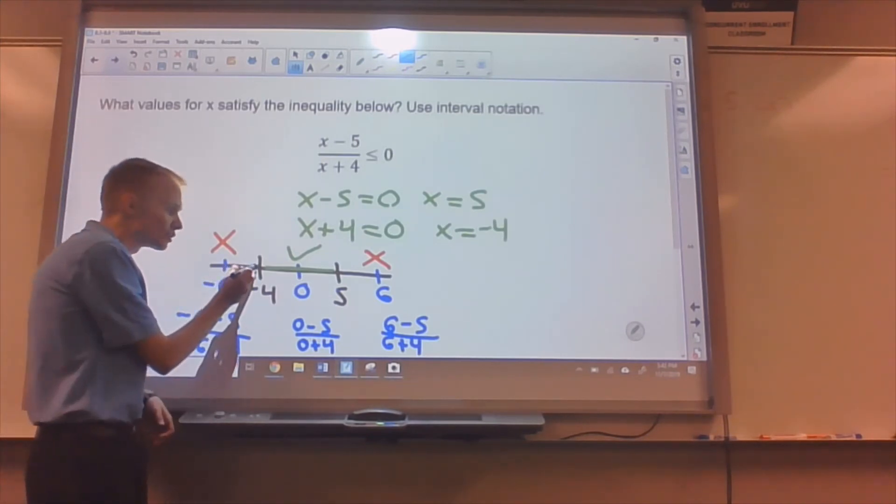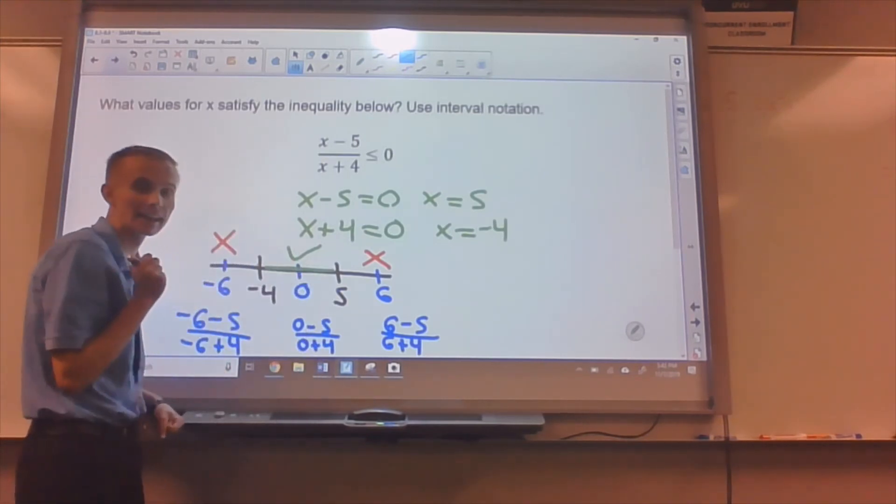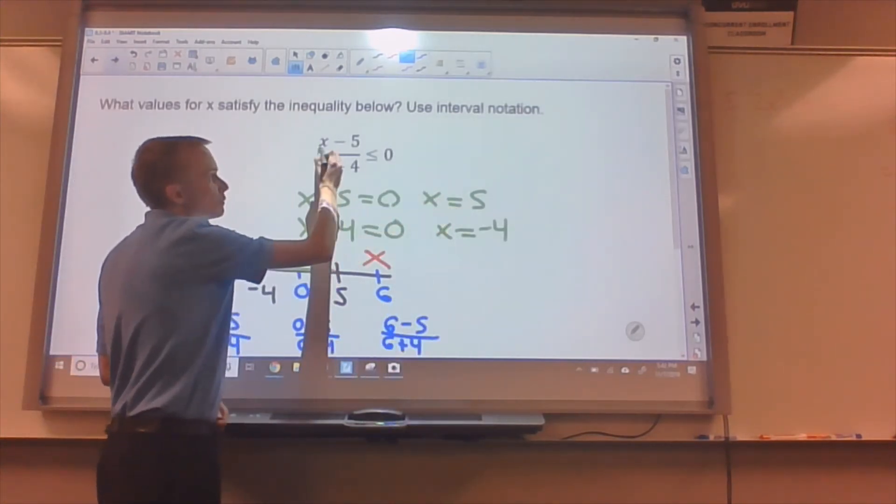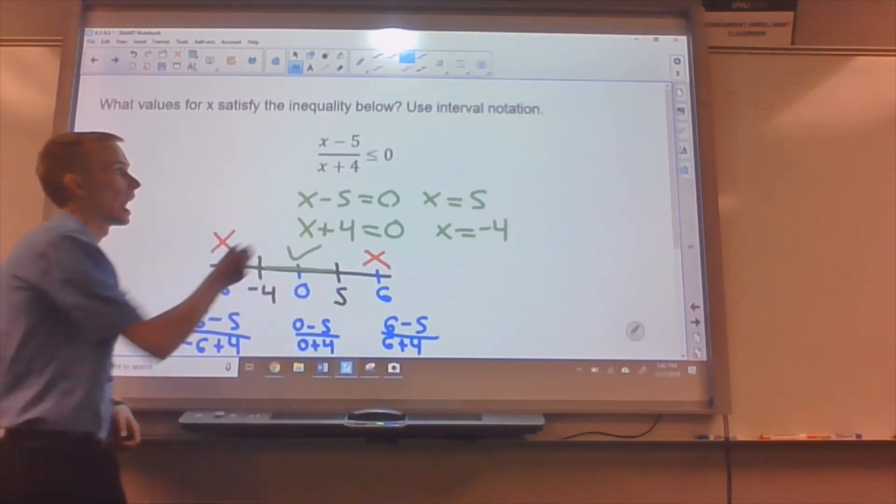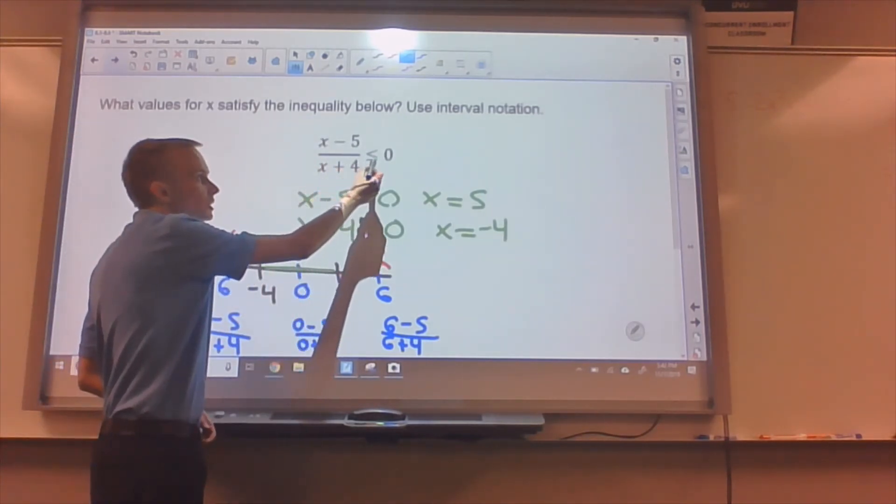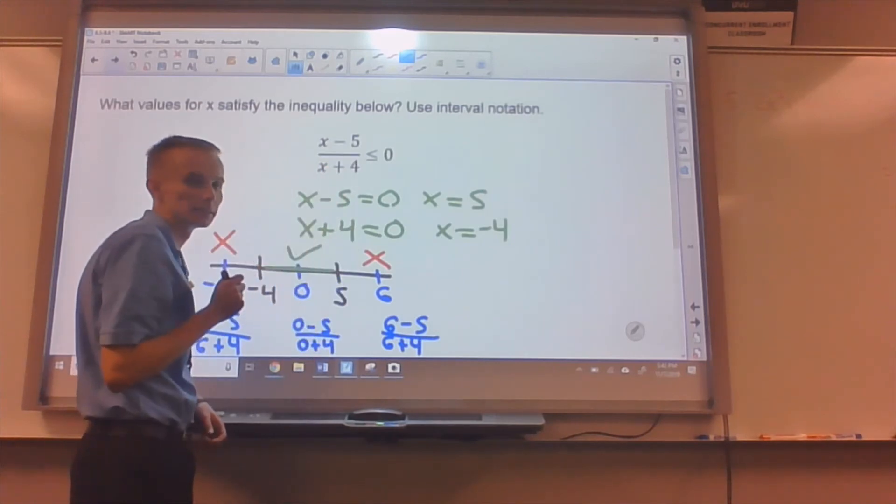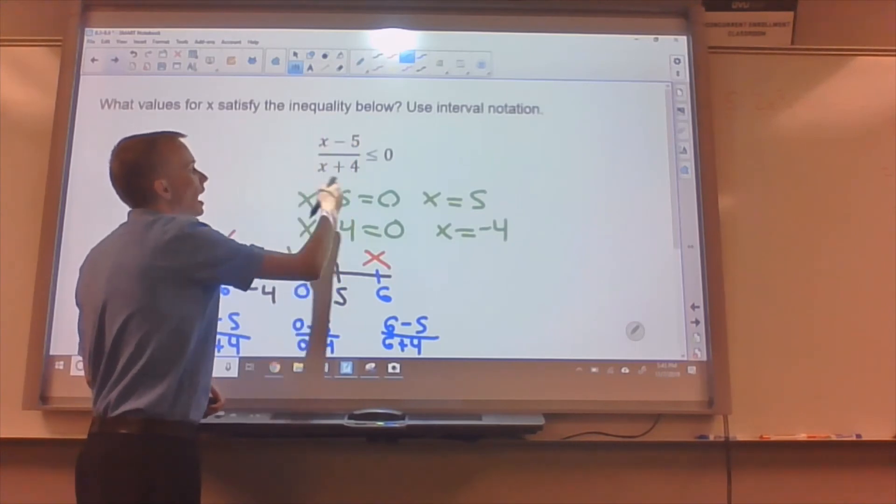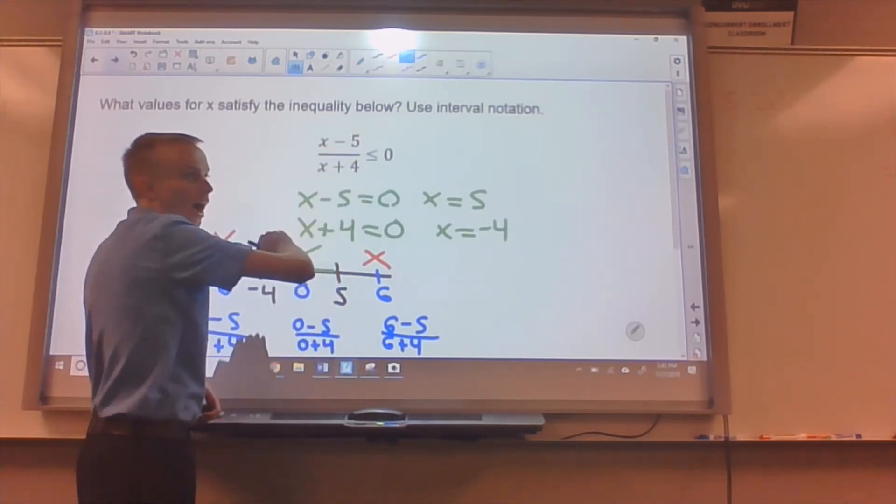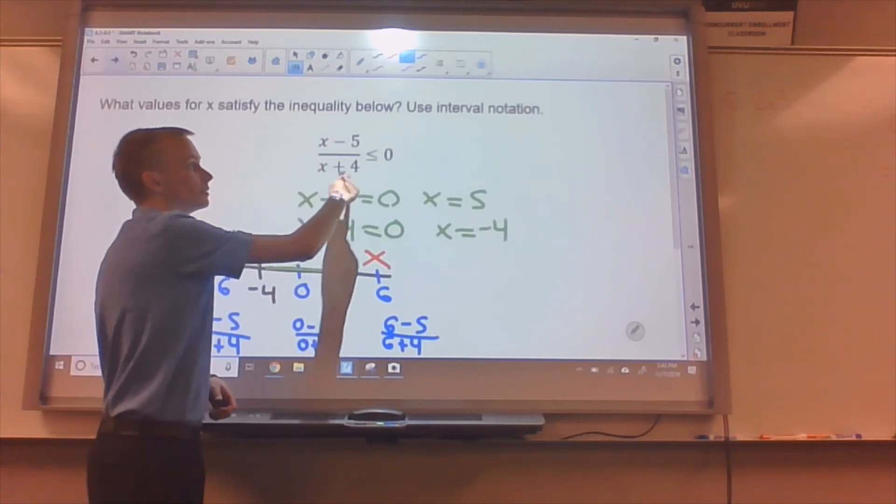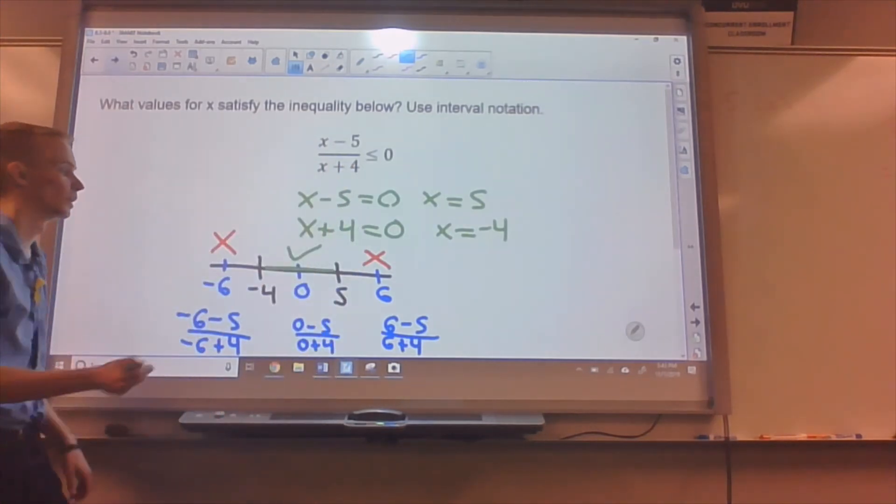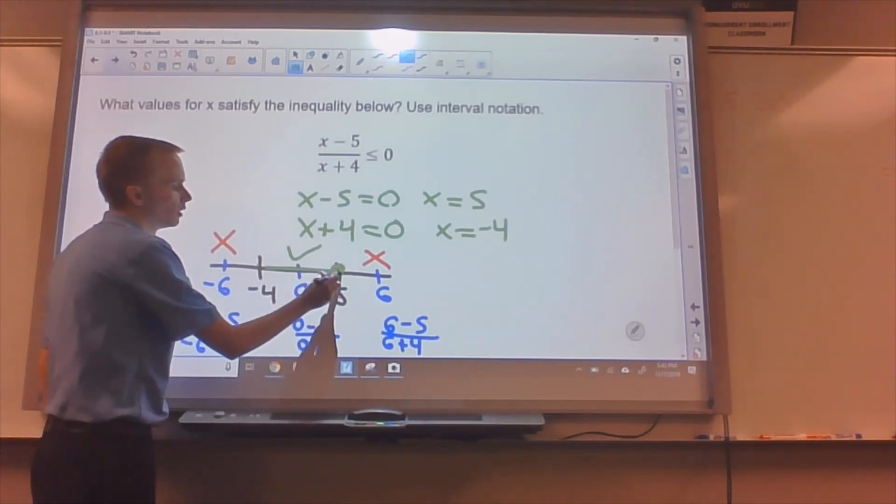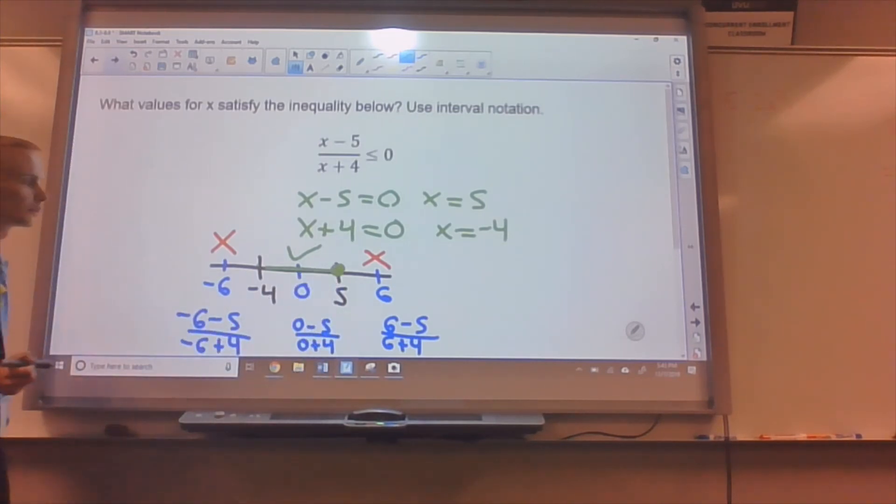Now, we just need to figure out, is it true at negative four and at positive five? So if positive five came from the top being zero, and there is an equals in the inequality, right? So if I plugged in x equals five into this equation, I would get zero over nine, which is just zero. It's less than or equal to zero. That's true. So positive five will work in the equation.